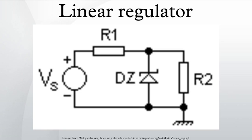It is, however, simpler — sometimes consisting of just a voltage reference diode — and is used in very low-powered circuits where the wasted current is too small to be of concern. This form is very common for voltage reference circuits. A shunt regulator can usually only sink current.